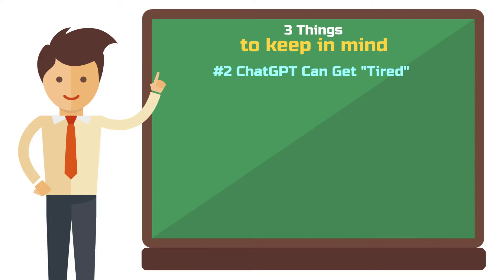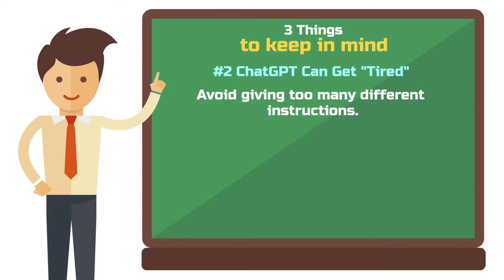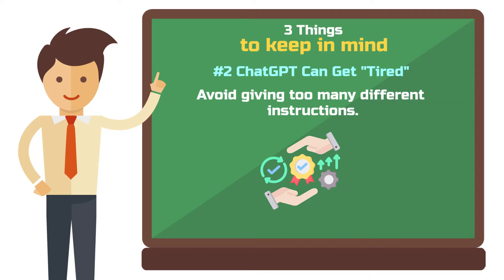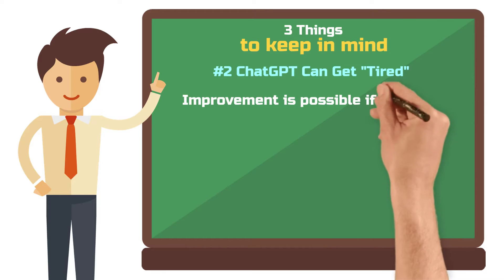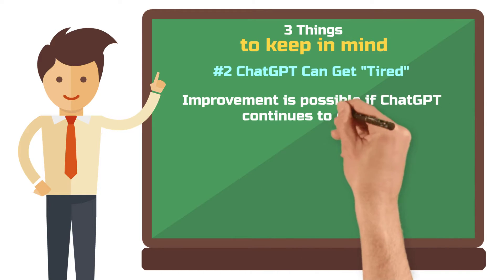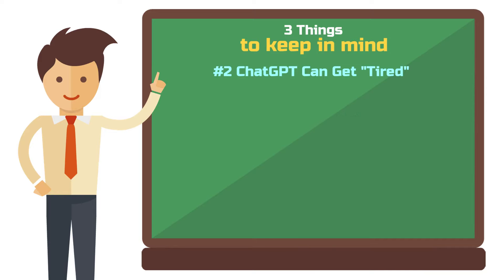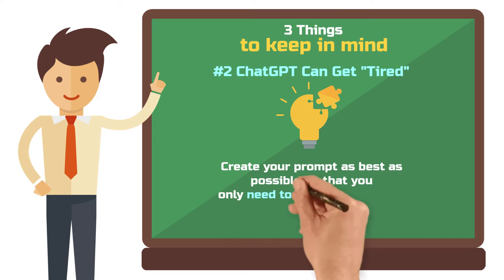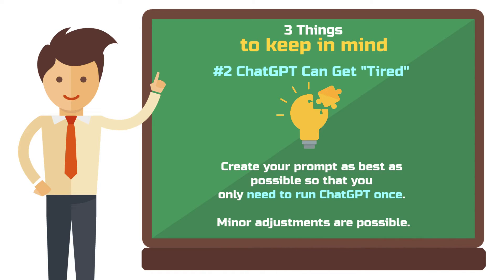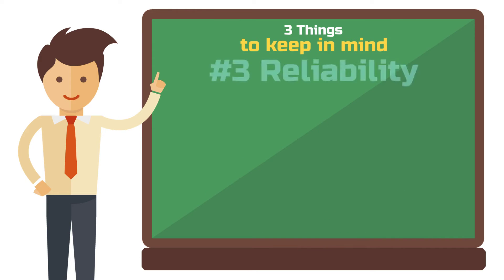Second limitation: ChatGPT can get tired. The AI is a black box — we can't see what's happening under the hood. If you overburden ChatGPT with many different instructions for an extended period, the quality of results may decline. The AI is likely to improve over time, and differences between the pro and free versions may exist. What you should do is create the entire prompt as best as possible and then let ChatGPT process it only once, or make only minor adjustments afterwards.